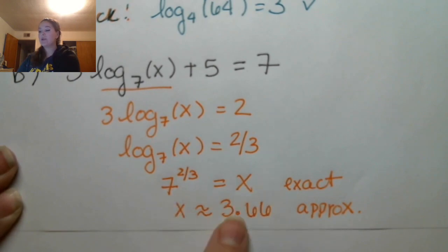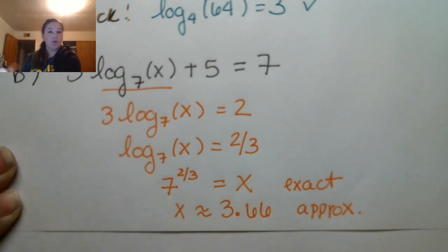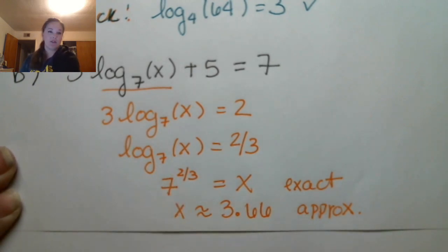The only reason you could get an exact answer is if 7 were a perfect cube — you could take the cube root by hand, and then you would just square it.